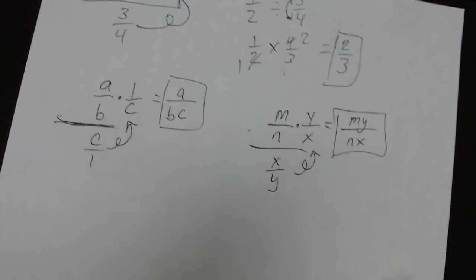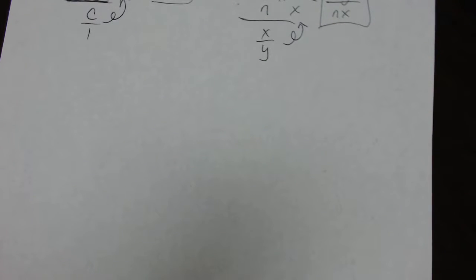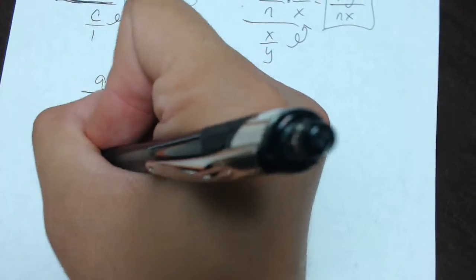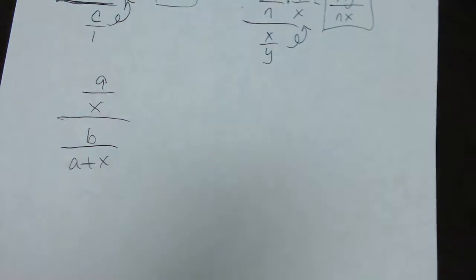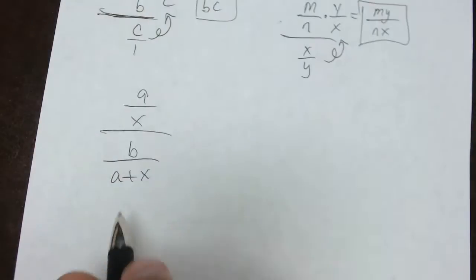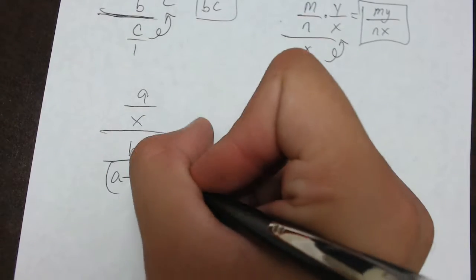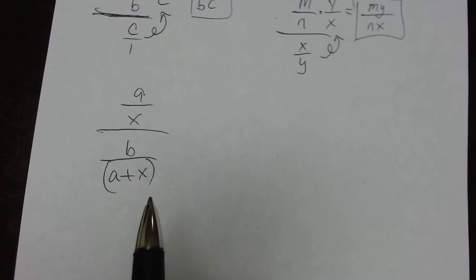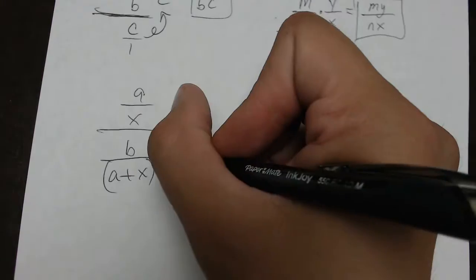Now, they don't always stay that easy. They get a little bit harder because they want to put polynomials in the mix. So, let's say we get a problem like this: A over X over B over A plus X. Now, this one looks a little bit scarier, but the same rule applies. The only thing I'm going to do is I'm going to take that polynomial and I'm going to put parentheses around it, so I don't forget it's one number and so that I will properly multiply it when the time comes.